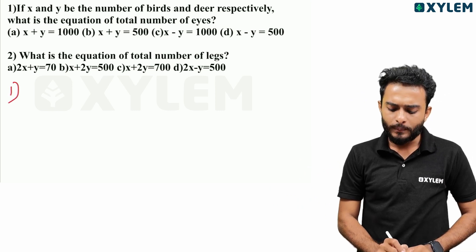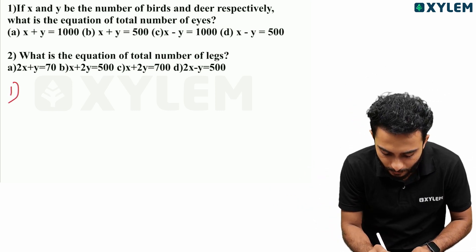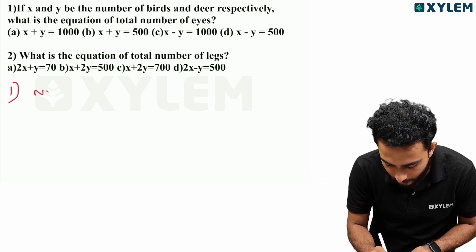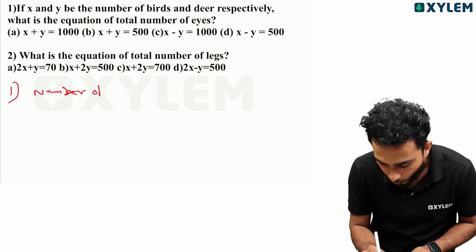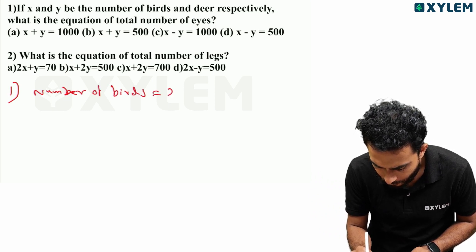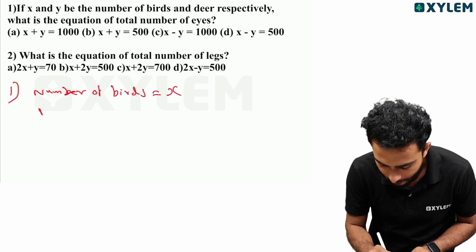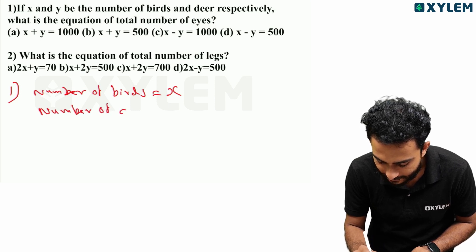Let x be the total number of birds and y be the total number of deer.